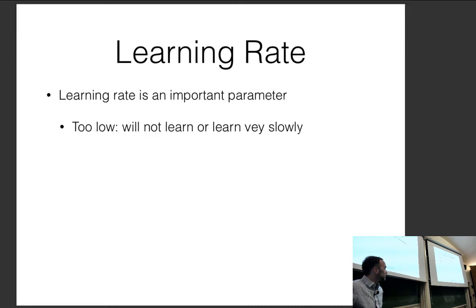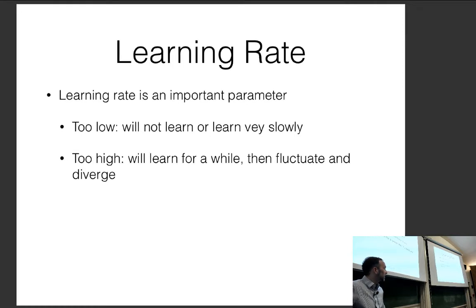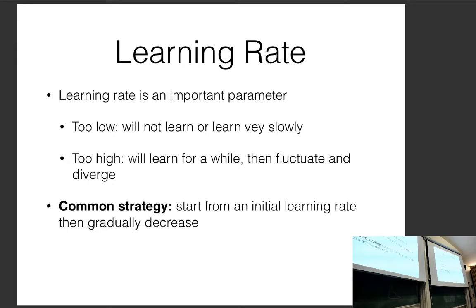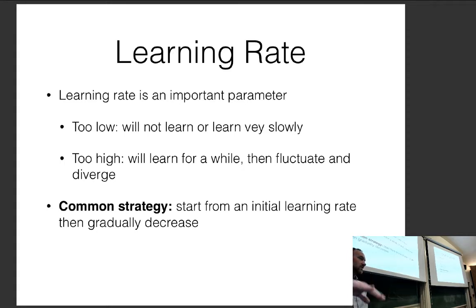Learning rate is a very important parameter. If it's too low, the model won't learn or will learn very slowly. If it's too high, it will learn for a while and then fluctuate and diverge. A common strategy is to start from an initial learning rate and then gradually decrease. In theory, stochastic gradient descent is guaranteed to converge only if you gradually decrease the learning rate — with a constant learning rate, convergence isn't guaranteed. Optimizers like Adam and Adagrad have this built in by gradually decreasing the learning rate as they accumulate information about gradient variance.